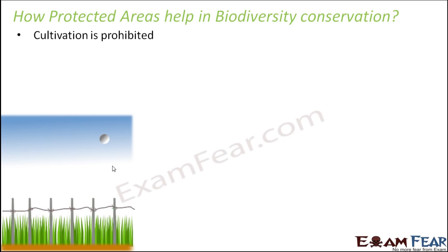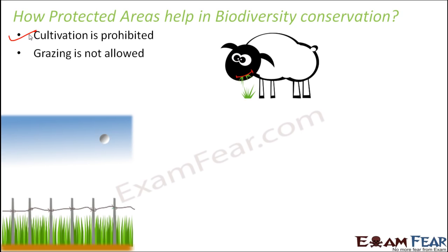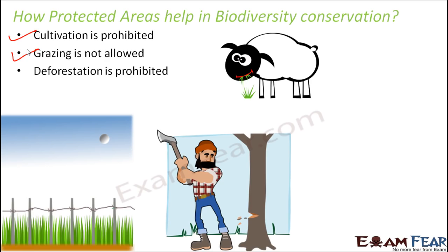When you start doing agriculture, the natural habitat of organisms is spoiled. Secondly, grazing is not allowed, because overgrazing also leads to loss of habitat. Deforestation is also prohibited — even though you are allowed to visit these national parks or sanctuaries, you are not allowed to cut a single tree. A huge fine and punishment is given if you are seen cutting down a tree in these areas.